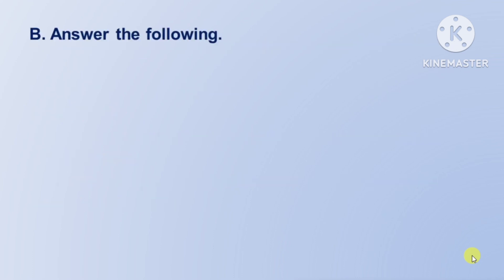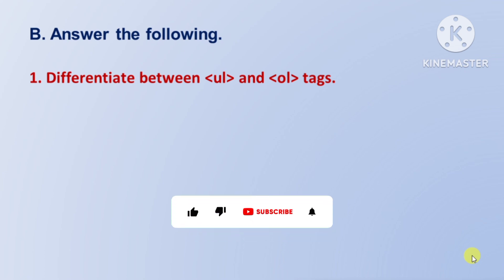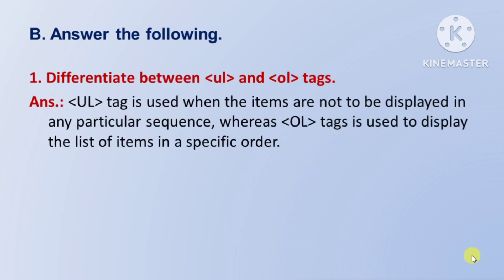See Section C, Answer the following. First question: differentiate between UL and OL tags — UL aur OL tag mein antar bataiye. Answer: UL tag is used when the items are not to be displayed in any particular sequence — jab hamen items ko kisi particular sequence mein display nahi karna hota, tab hum UL tag ka prayog karte hain. Whereas OL tag is used to display the list of items in a specific order — jabki OL tag ka prayog list of items ko ek specific order mein display karne ke liye kiya jaata hai.